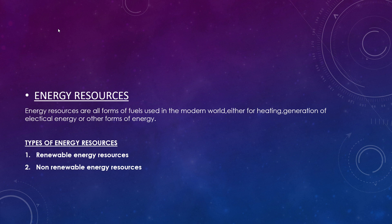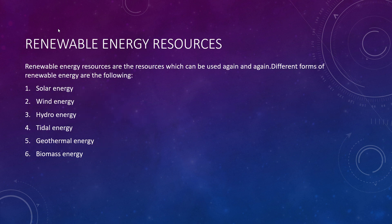There are two types of energy resources: one is renewable and the second one is non-renewable resources. Renewable energy resources are those which can be used again and again. The different forms of renewable energy resources are solar energy, wind energy, hydro energy, tidal energy, geothermal energy, and biomass energy.